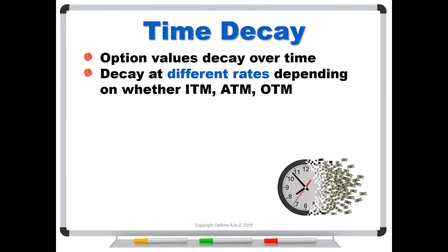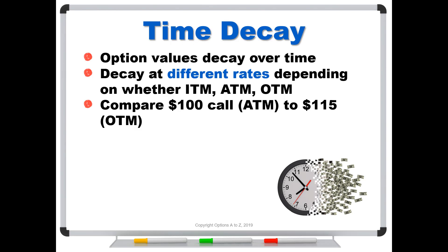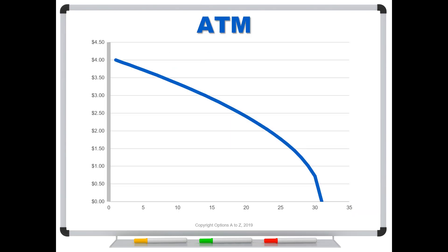To make the point, let's compare a $100 call — our at the money option, with the stock at $100 — to a $115 strike, which is out of the money. Here's the first time decay graph. These are 30-day options. This is the at the money curve, and you can see it's priced at about $4. The option starts losing money at a fairly slow rate relatively speaking, but when you get into that last portion — definitely within the last week or so — it starts going off a cliff.